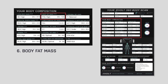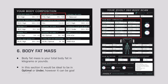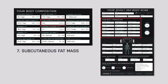Then we move on to the body fat mass side. Body fat mass is your total body fat in kilos. Again you have optimal, under, or high. Down this section we ideally want to be in the optimal or under range. It can be goal-specific though — if someone is trying to put on muscle and they are in the optimal-to-under range, we need to let them know that's not necessarily an optimal way to build muscle because they are in a deficit.